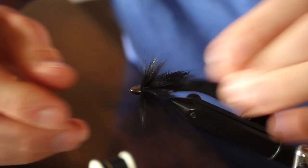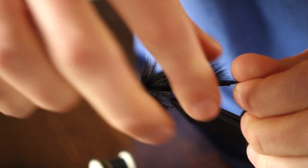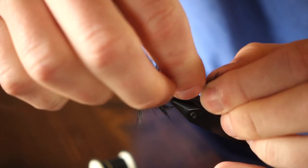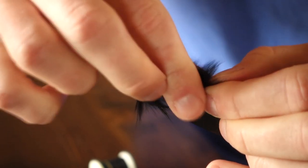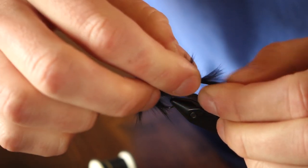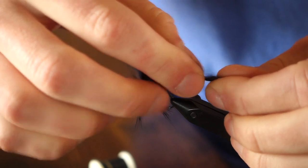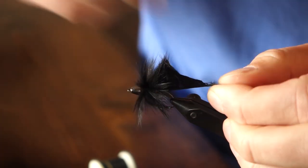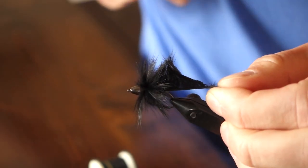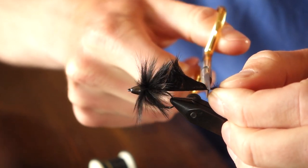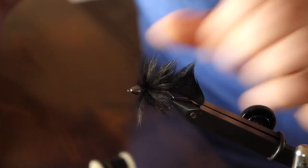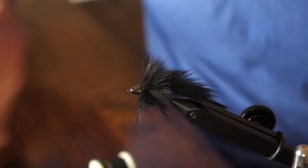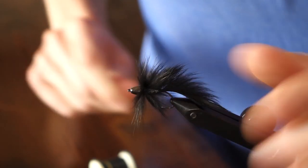Now we're just going to trim up this fly a little bit, get it to the right size. It always helps to lick your fingers to get this fur sized the way you want it to. I'm basically just sizing the tail here. I want that tail to be about the length of the hook. I don't like the tail too long on slump busters. I'll go ahead and trim off just a little bit of excess. I like that, I think that looks pretty good.